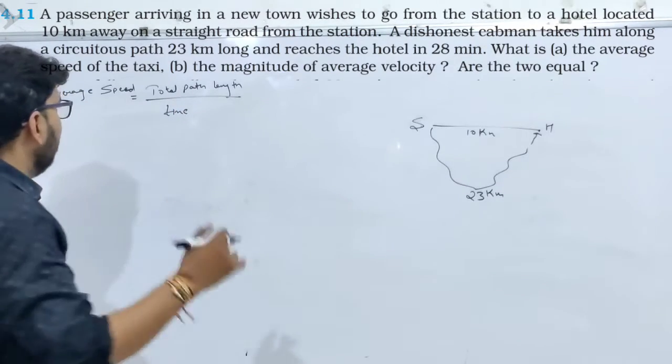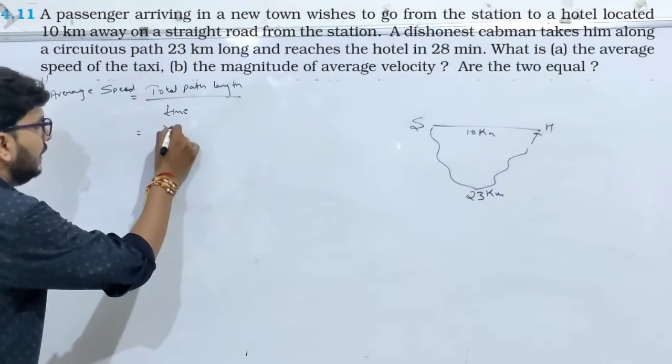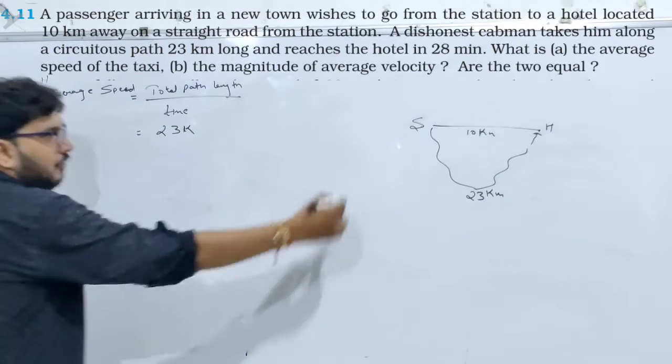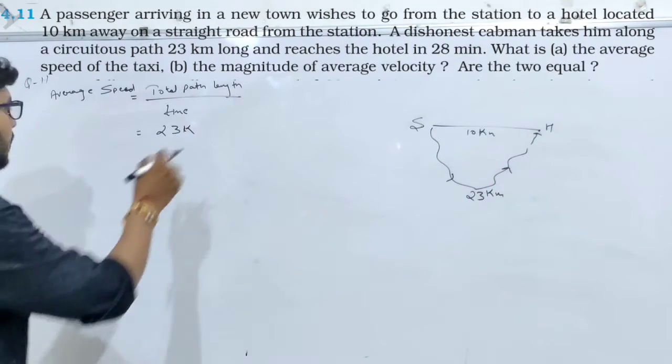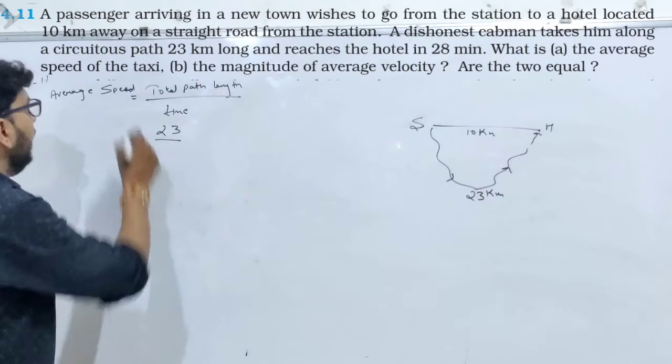Now what is total path length? कितना है total path length? Total path length is 23 kilometers. यही वाला path तो लेंगे आप, क्योंकि वो गए इसी रास्ते से 23 kilometers. Time कितना लगा?